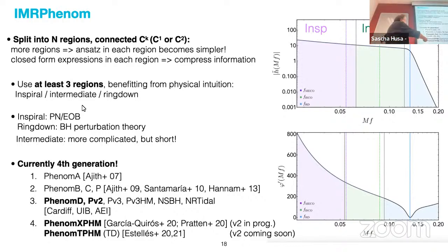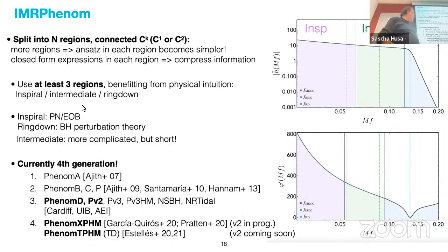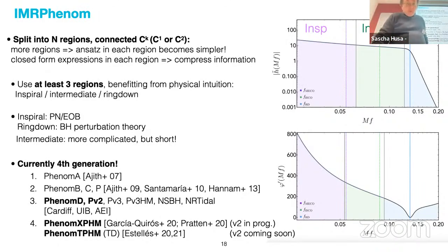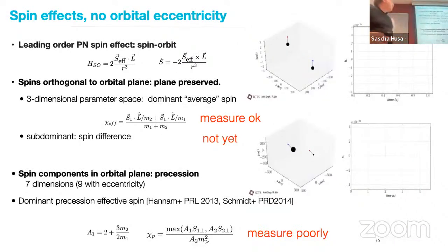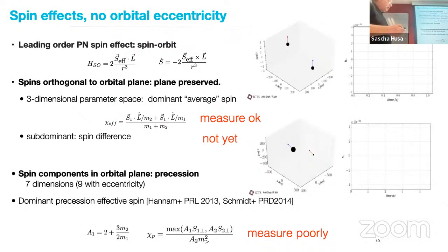The latest generation — the fourth — took about five years with ten people and describes subdominant harmonics, precession, and other effects. It is not quite as accurate as we really need — not quite sufficient for O4 — so we need to make some improvements, and certainly not sufficient for LISA.